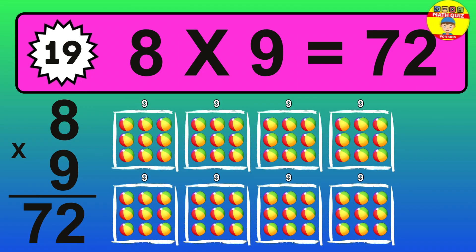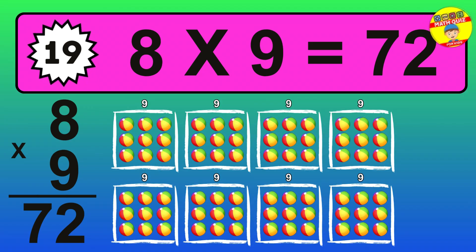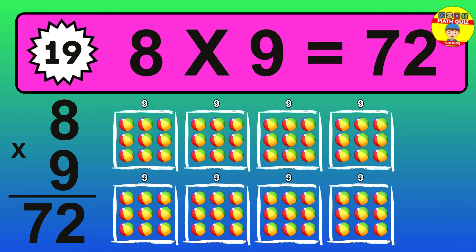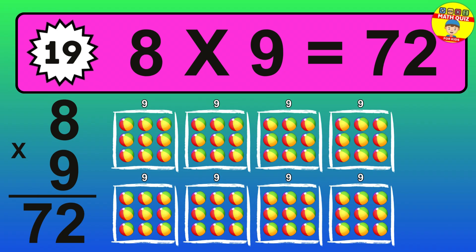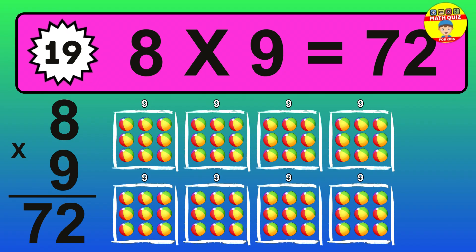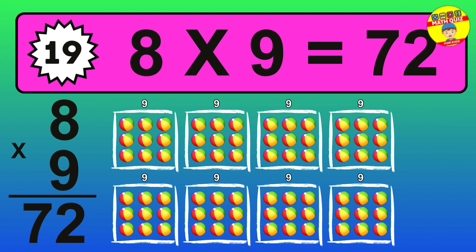The answer is 8 times 9 is 72. To calculate, we have 8 groups with 9 balls each one. So, how many balls do we have? 72 balls.